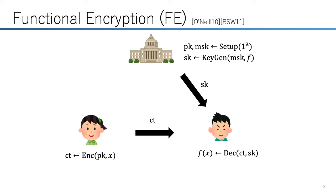FE can be applicable to various situations. For example, assume that x is a database and f is some SQL query. Then a user can make SQL queries to the encrypted database without revealing any other information of the database by using functional encryption.